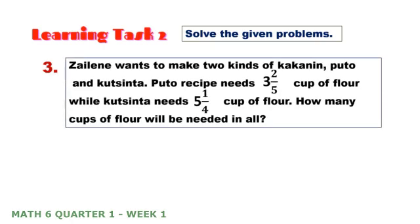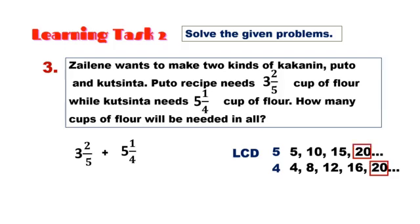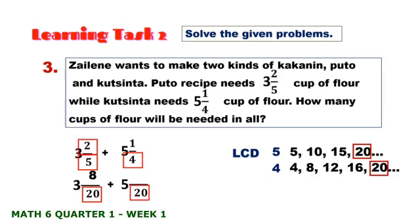Number 3: Sailene wants to make 2 kinds of kakanin — puto and kutsinta. Puto recipe needs 3 and 2 fifths cups of flour, while kutsinta needs 5 and 1 fourth cups of flour. How many cups of flour will be needed in all? The LCD of 5 and 4 is 20. So: 20 ÷ 5 × 2 = 8; 20 ÷ 4 × 1 = 5. Adding: 3 + 5 = 8, and 8 + 5 = 13 over 20. The answer is 8 and 13 twentieths.